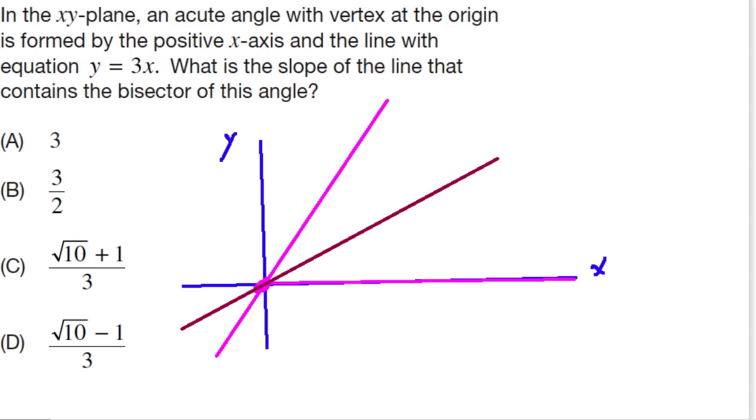And all we're told really is that this equation right here is equal to Y equals 3X, and this equation down here is Y equals 0, so Y is 0.